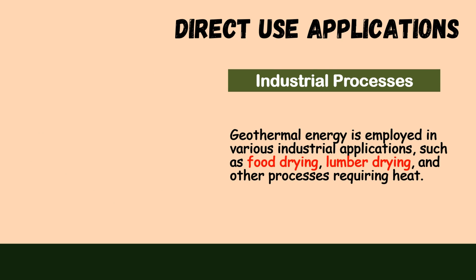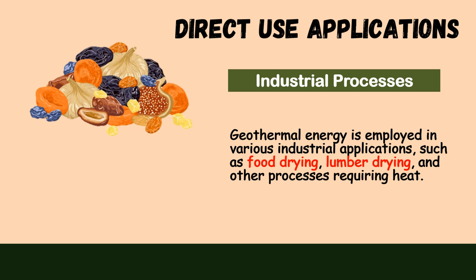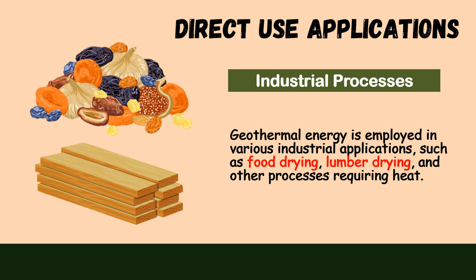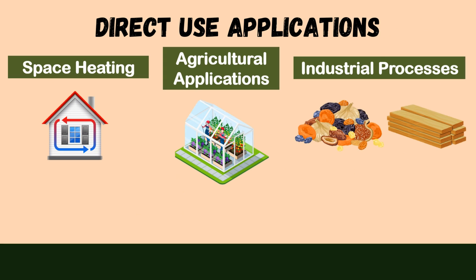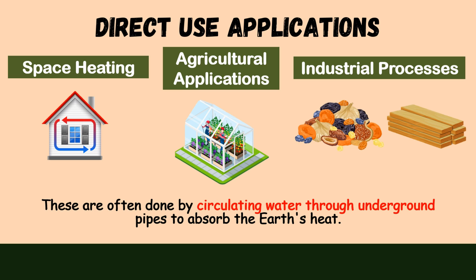In industrial processes, geothermal energy is employed in various industrial applications such as food drying, lumber drying, and other processes requiring heat. These are often done by circulating water through underground pipes to absorb the earth's heat.